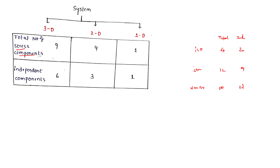Stress components: at 1D level there is 1, at 2D level there are 4, at 3D level there are 9. Independent components are 1, 3, and 6 respectively for 1D, 2D, and 3D.